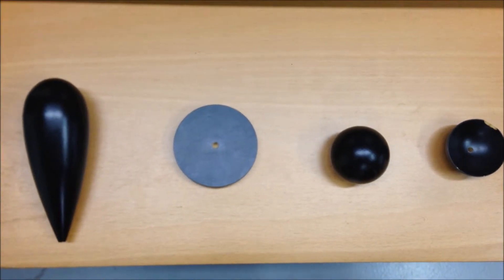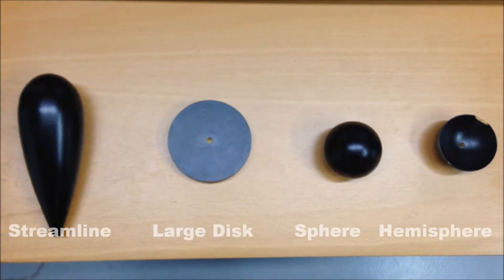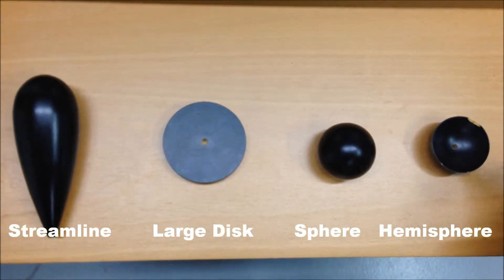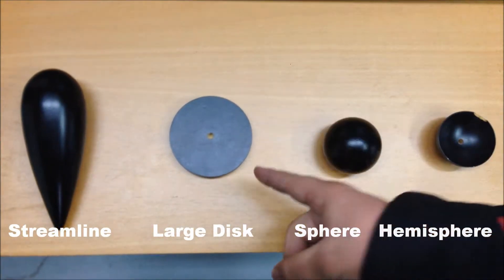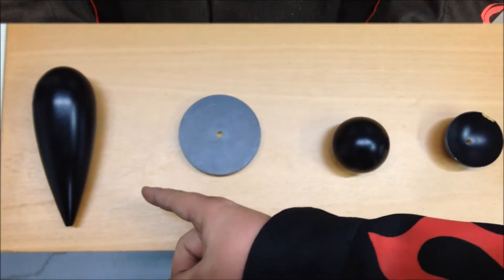The drag coefficient of four different shapes will be found in this experiment. The hemisphere, the sphere, the large circular disk, and the streamlined body.